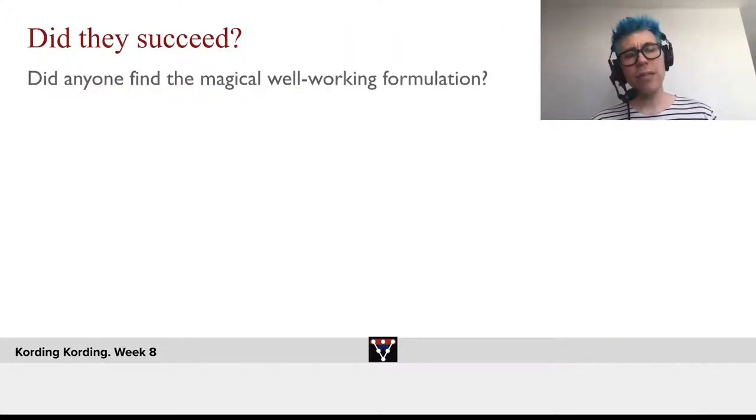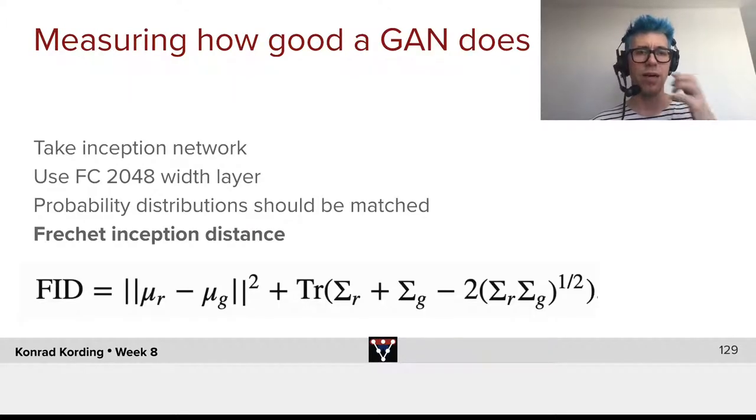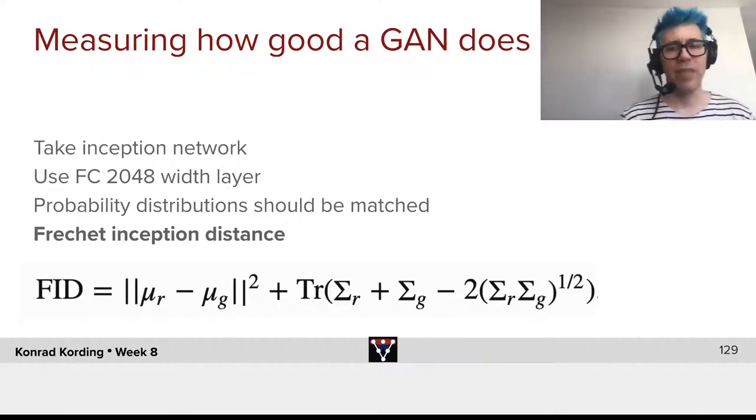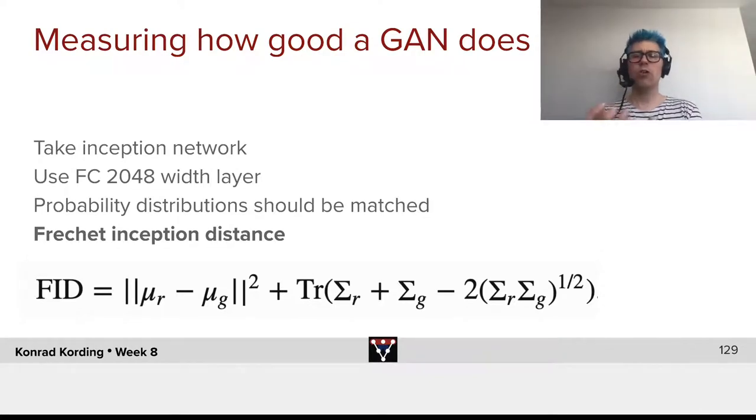Did all these mathematical ideas succeed? Did anyone find a magical, well-working formulation that doesn't feel as hacky as it is right now? Let's see. Let's say we want to measure how good a GAN is. What does it mean to evaluate how a GAN works? It's very difficult.